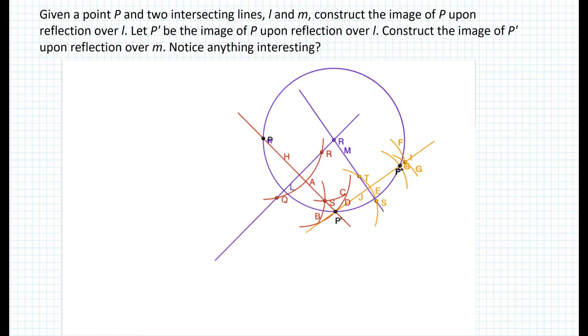And so therefore you can express P to P prime and P double prime as a rotation about the point of intersection between line L and M. So that's something that we actually learned in the previous YouTube video.